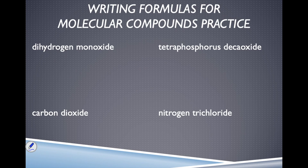The first compound we're dealing with is dihydrogen monoxide — a scary one. There are actually petitions on the internet calling for the banning of dihydrogen monoxide. For example, dihydrogen monoxide is involved in every single drowning. It's also a key component in lots of corrosive or poisonous solutions — like acids and many household cleaners. So let's write the formula for it.